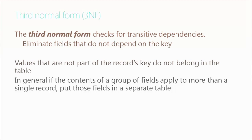Third normal form checks for what are called transitive dependencies — eliminating fields that do not depend on that key. I might have extraneous information that's not relevant, and I want to put that in a separate table. When massaging data to make sure it's in third normal form, we're going to make sure there are no columns that aren't directly related to that CD.